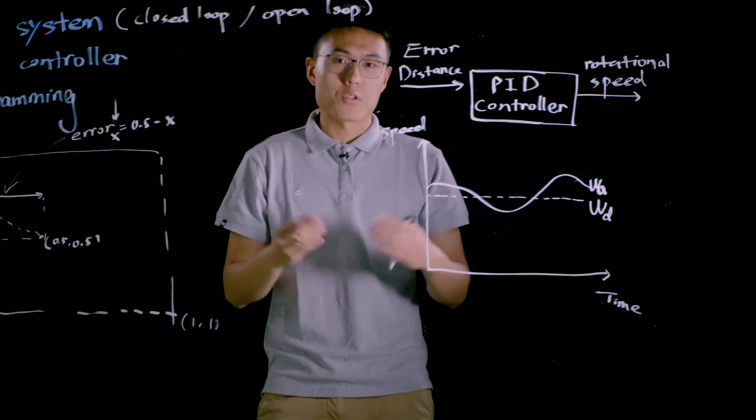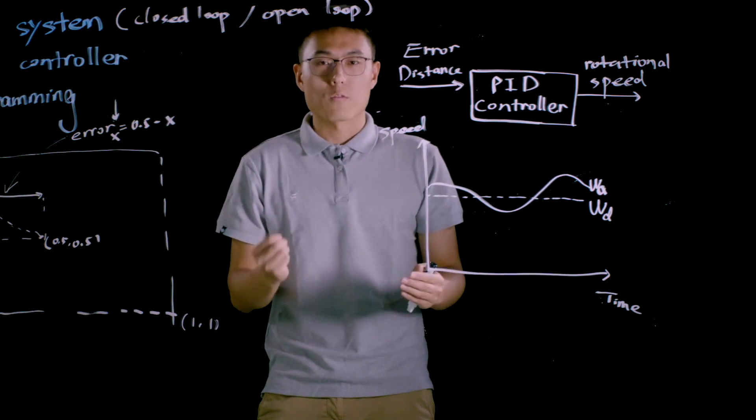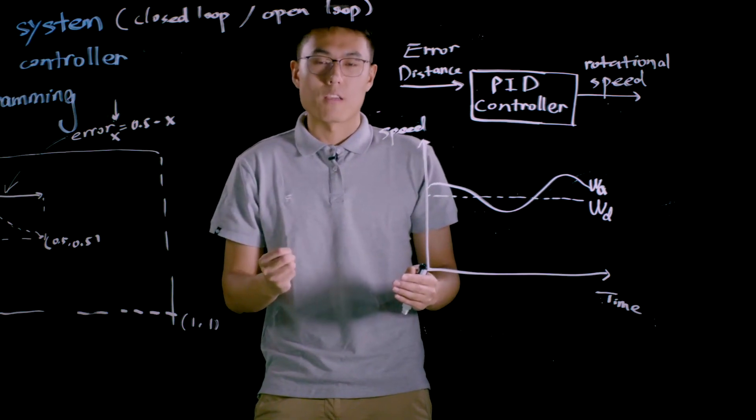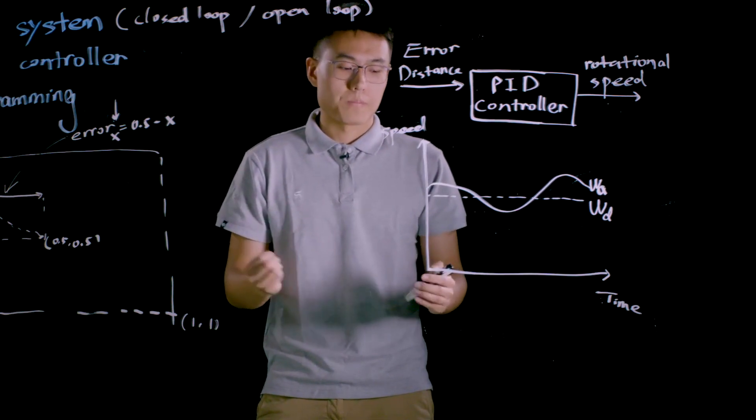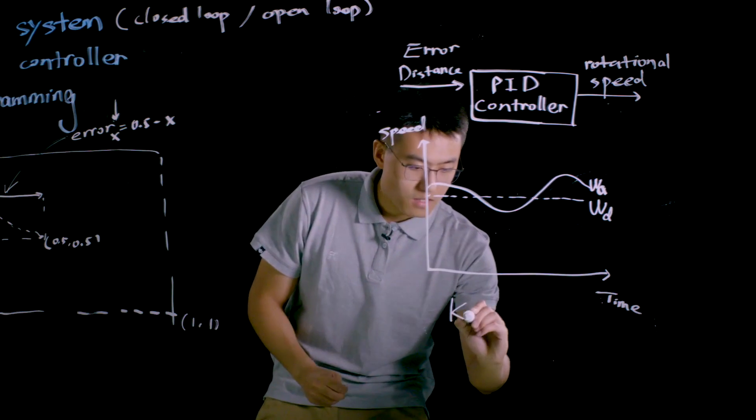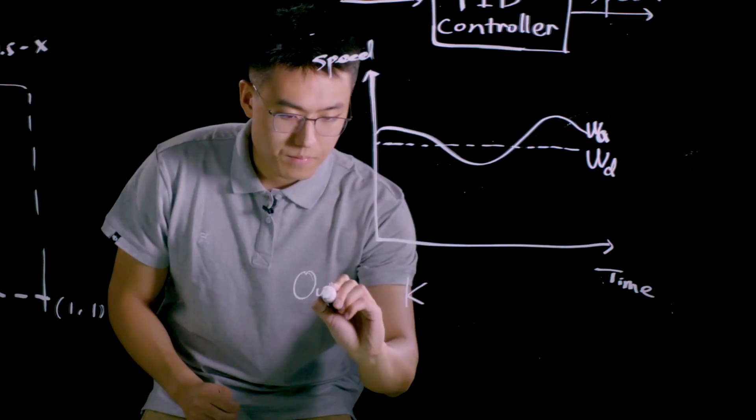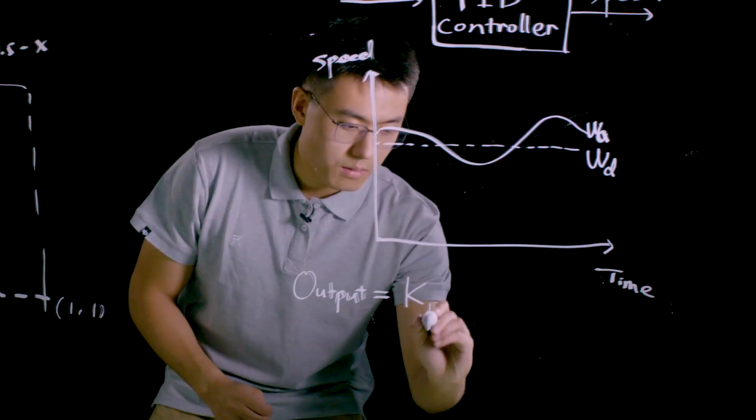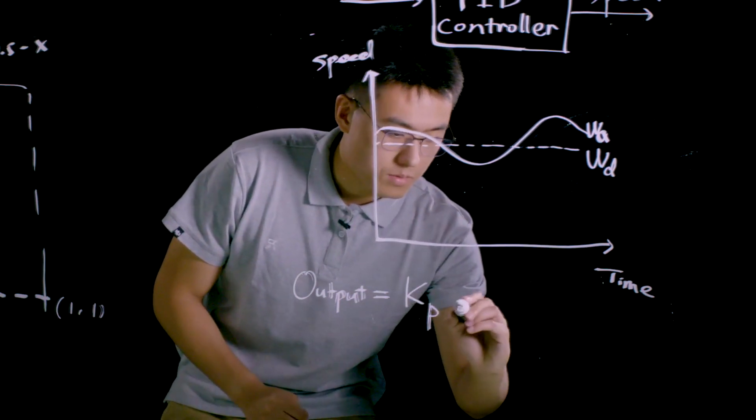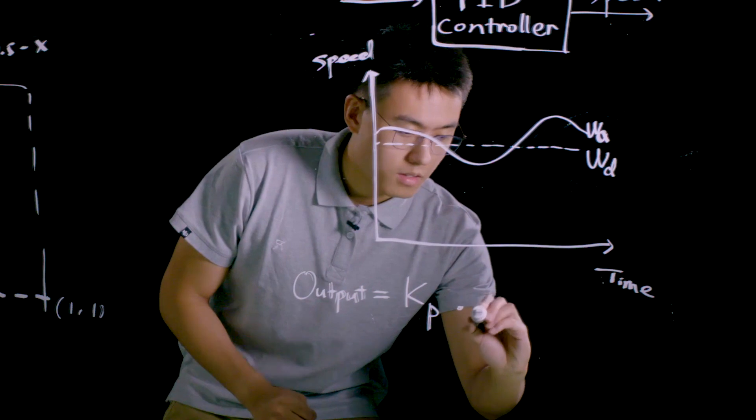P control, or proportional control, is one of the most frequently used control strategies in feedback control systems. P denotes proportional, and output under this case. Output equals to Kp times error.